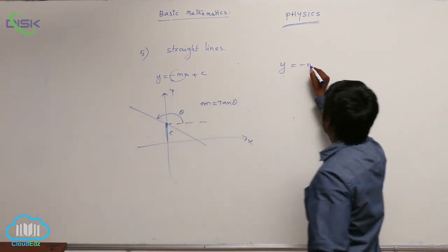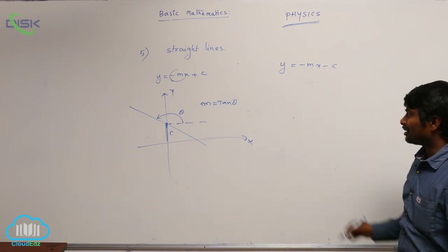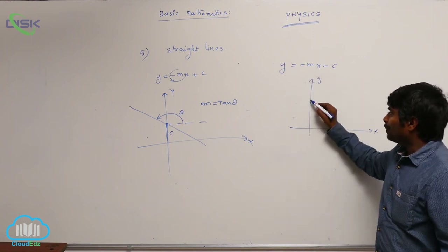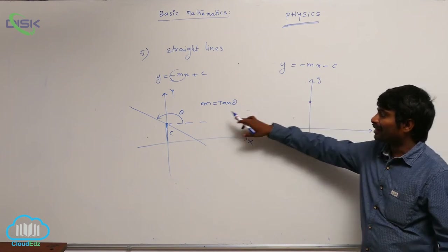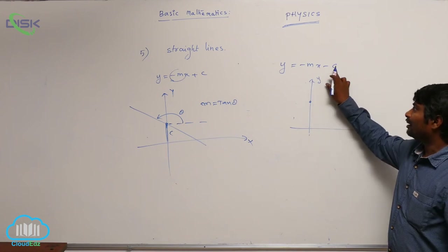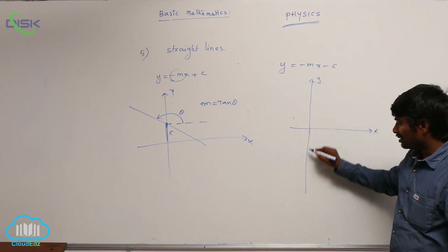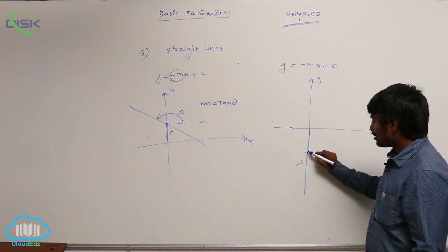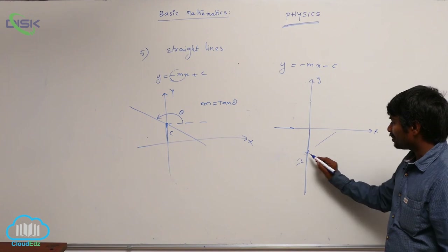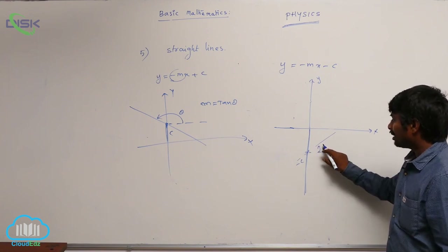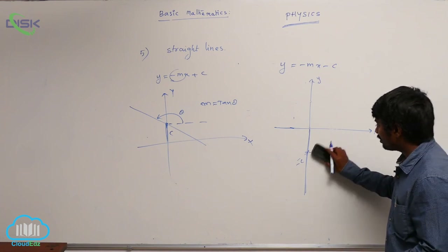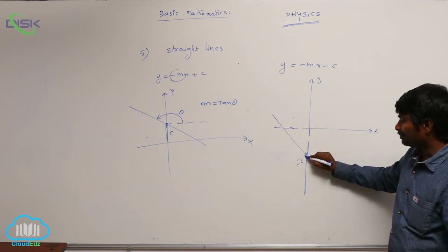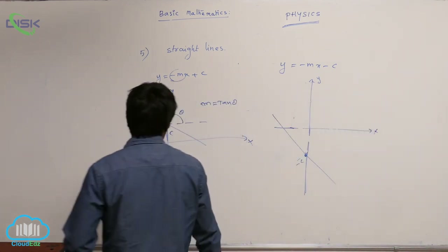For y is equal to minus mx minus c, intercept is negative and slope is also negative. Slope is negative so it should make an angle greater than 90 degrees with a positive x-axis, and intercept is negative so it should intersect the negative y-axis. I should not draw it making angle theta less than 90 degrees with a positive x-axis, because slope is negative. So the line must be drawn in this way. If we know the equation then we can draw the graph.